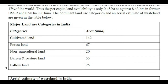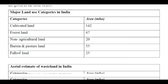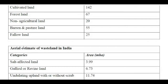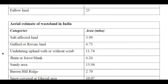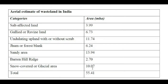Fallow land is land where we can do agriculture but are not doing it for a particular period of time — this is approximately 25 million hectares. We will discuss all these categories in detail. The wasteland of India under various wasteland categories is around 55.41 million hectares.